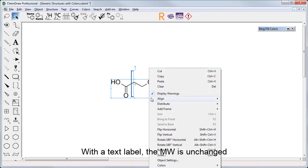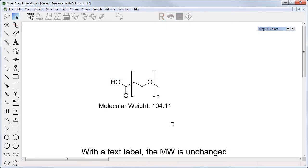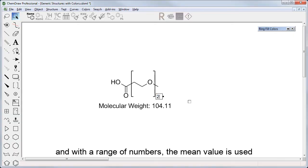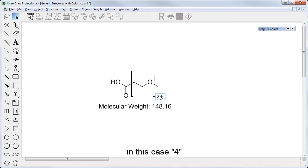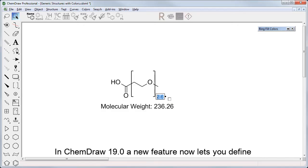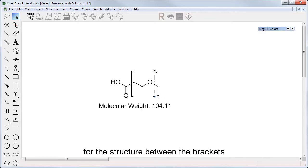With the text label, the molecular weight isn't changed, with the number it evolves, and with the range of numbers the mean value is used, in this case 4. In 19, a new feature now lets you define the average molecular weight for the structures between the brackets.